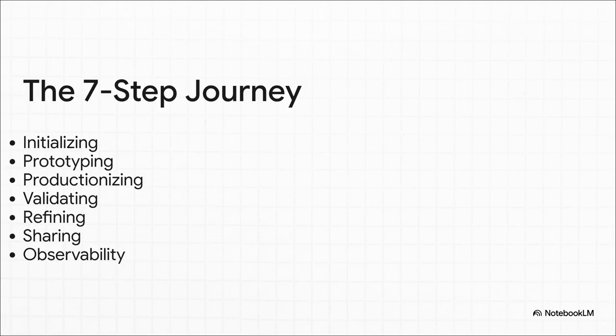It all starts with initializing — getting your professional dev environment set up correctly. Then comes prototyping, the part you're probably super familiar with. But the real transformation starts in step three: productionizing. This is where we turn that messy prototype into a clean, structured package. From there, we make sure it's high quality through validating, improve the whole process with refining, make it accessible by sharing it, and finally make sure it keeps running smoothly with observability.